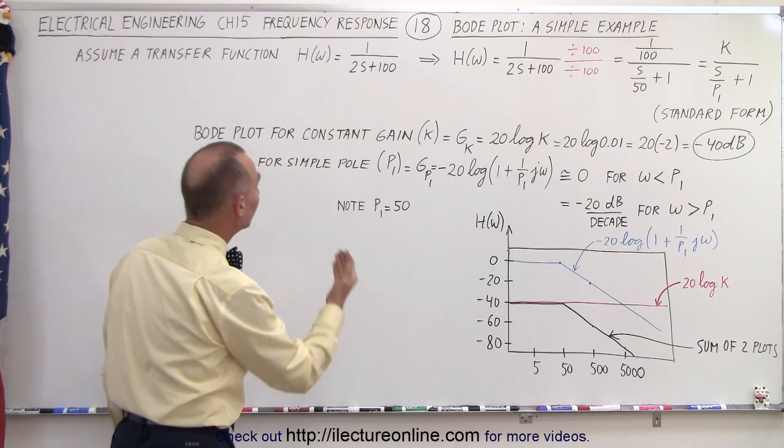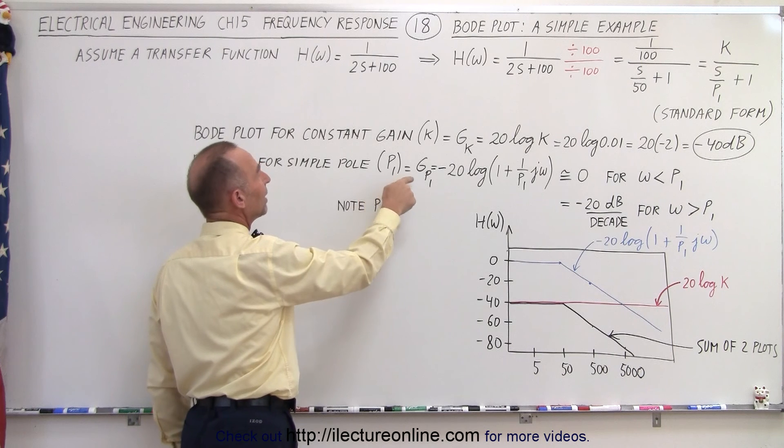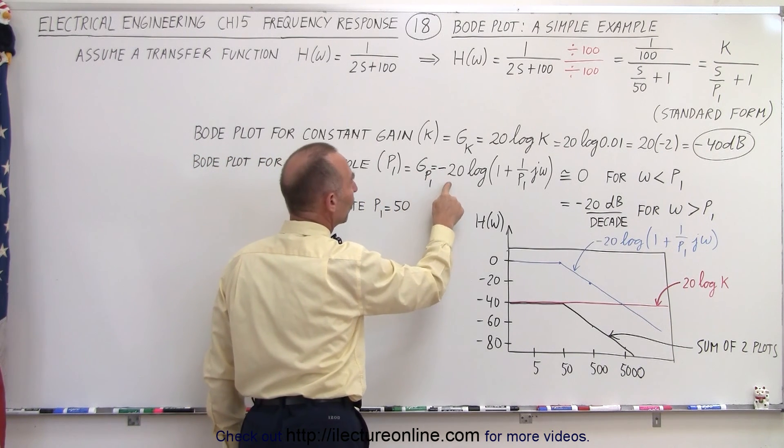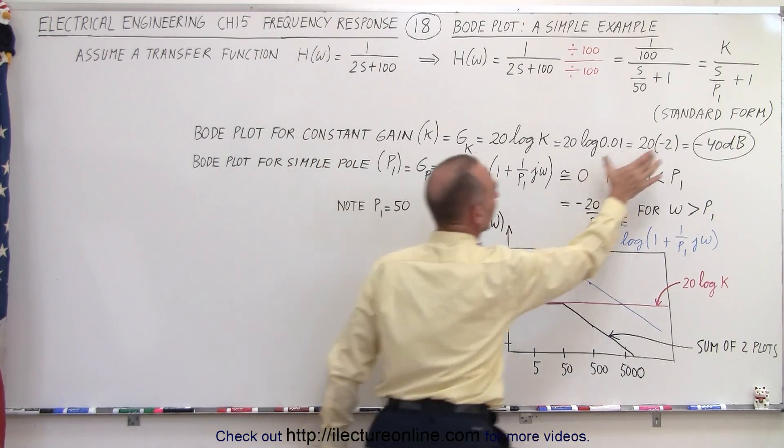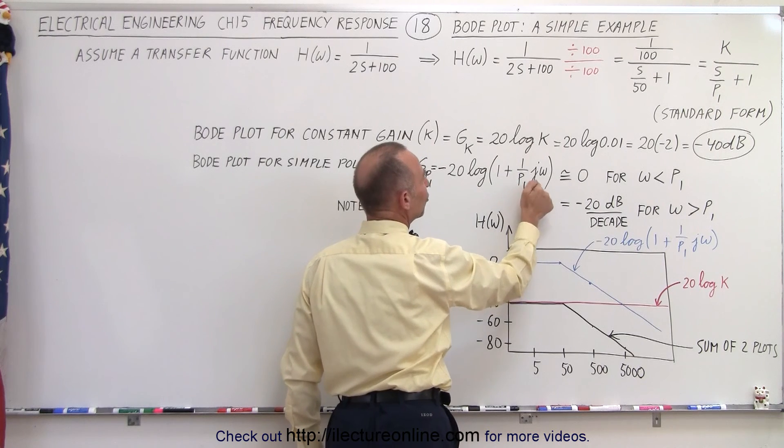But then we also have the simple pole. The simple pole P1 and so we attain that. We attain the gain by having minus 20 times the log of this portion of the transfer function. So we have 1 over P times j omega.